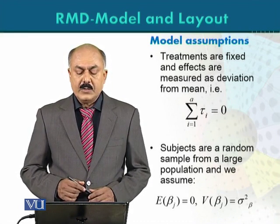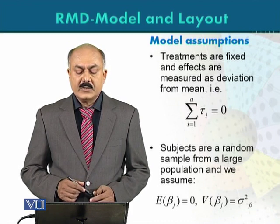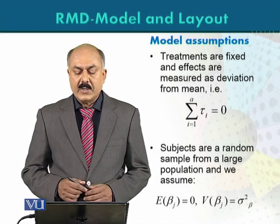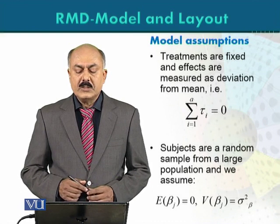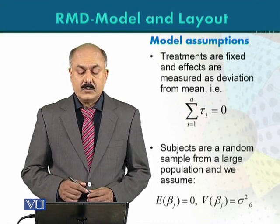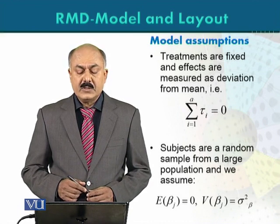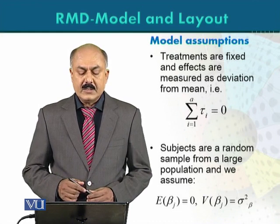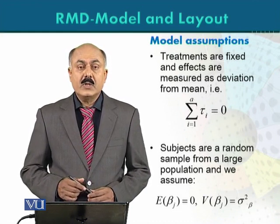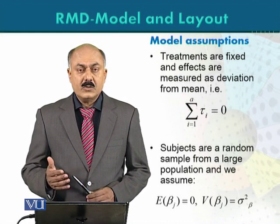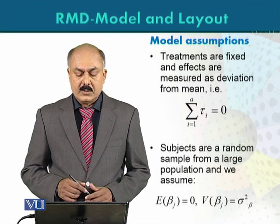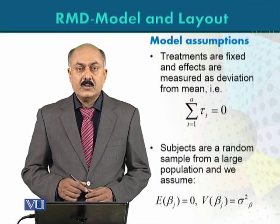There are background assumptions in the model. Treatments are fixed, and their effects are measured as deviations from the mean — that is, the sum of ta_i for i from 1 to a equals 0. We assume treatments are fixed, not randomly chosen. We decide the quantity or level prior to experimentation and fix it. Ta_i is the effect expressed as deviation from the overall mean, so it must sum to 0.